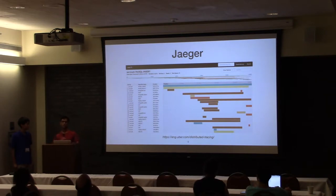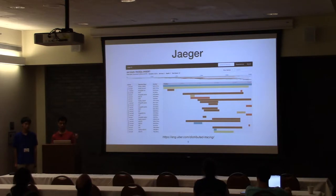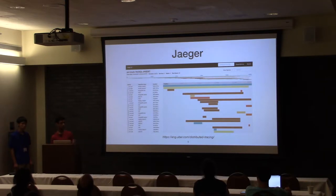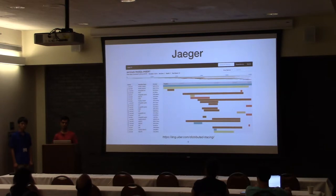You can also look at how different services are operating concurrently, when they start and end, and how long each one takes. So it's fairly easy to identify a bottleneck — something is taking too long. You can simply look at the length of the bar. If it's too long for what you expect, you can identify that as your bottleneck, and that is what causes your top-level request to take too long.